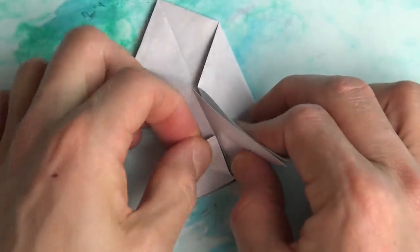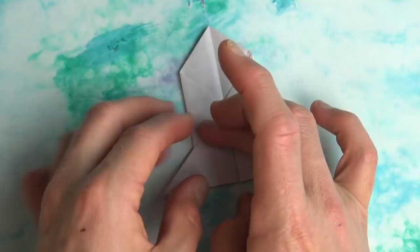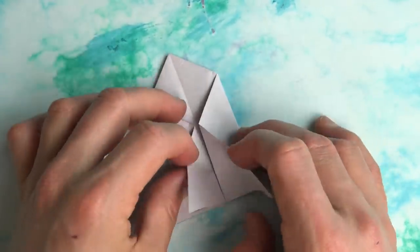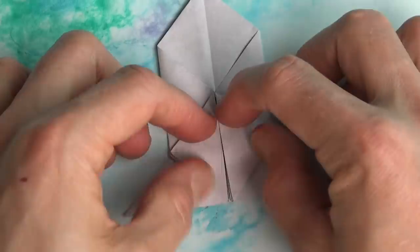And repeat. And bring the wings back down. Turn over and repeat. Now fold these two flaps in like this.